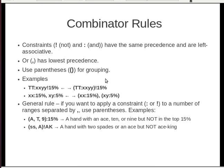Combinators have some rules. The constraints — that's the NOT and the AND — have the same precedence and are left associative. So that means you can chain them together, like we saw in the previous slide. The OR — that's the comma — has lower precedence, and you group with parentheses.